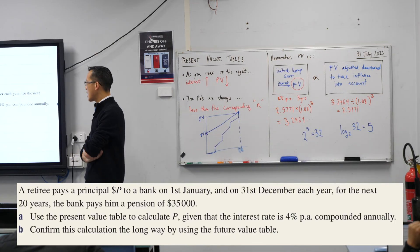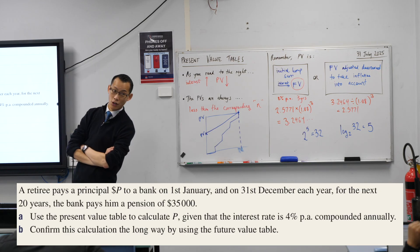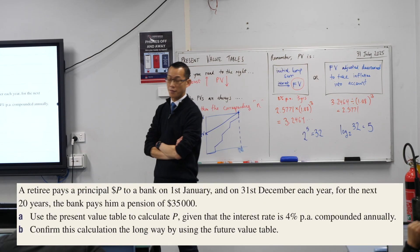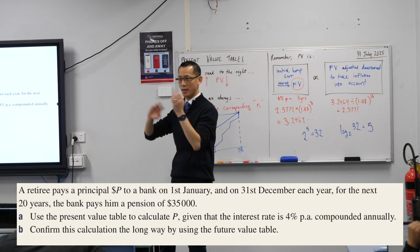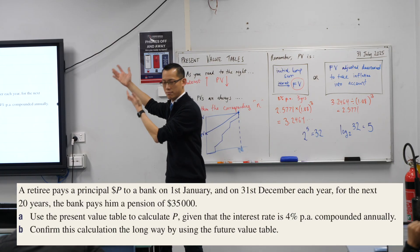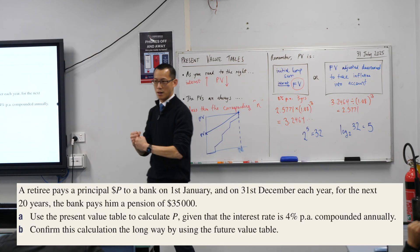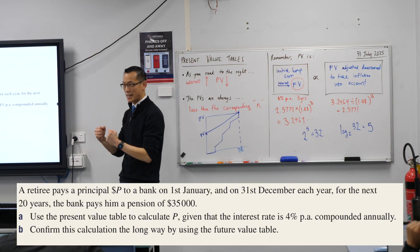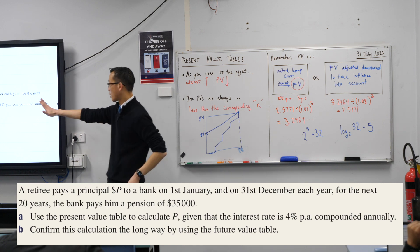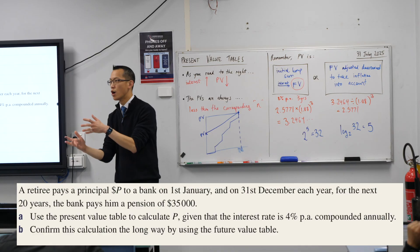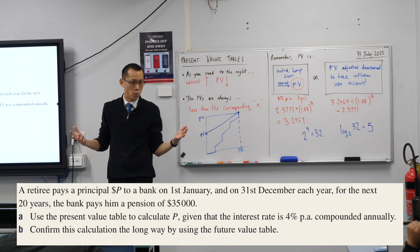A retiree pays a principal P dollars to a bank on the 1st of January and then on 31st of December each year for the next 20 years, the bank pays them a pension of $35,000. And this is what happens kind of in real life all the time. This is kind of the way superannuation works. It's like I've spent my whole life earning all this money and I've set some aside and then I'm going to pay it to you so that you can sort of drip feed it back to me over time and I still have income even when I'm not working.